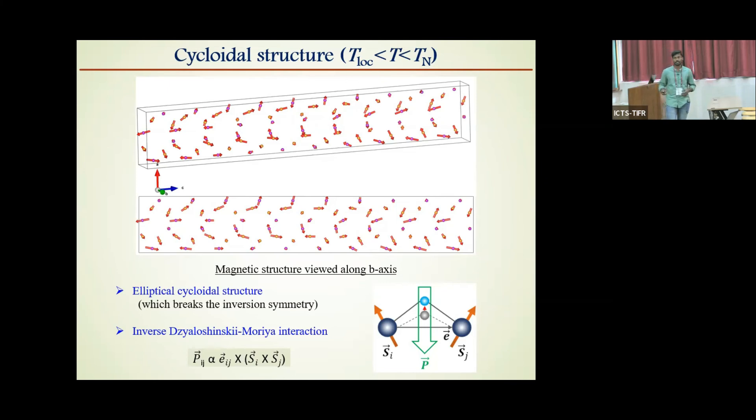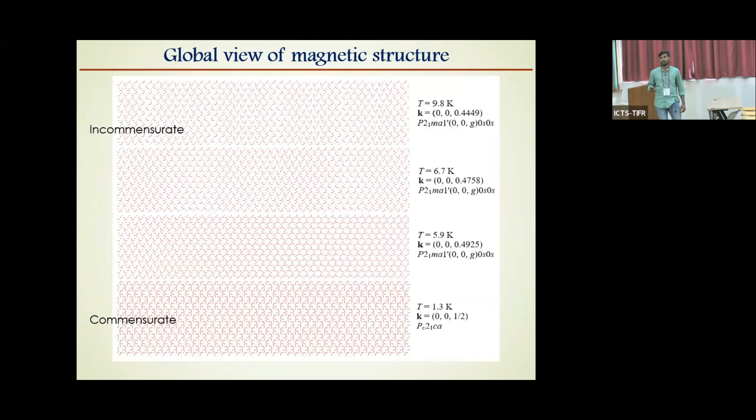The magnetic structure which I have shown here is within one magnetic unit cell. When we look at the global view of the magnetic structure, this is how it looks. And it is formed by a combination of different cycloidals corresponding to each magnetic ion. And with decreasing temperature, the modulation vector changes and finally locks into (0,0,½) at 6 Kelvin and becomes commensurate. That's why the transition at 6 Kelvin is called T lock-in transition.